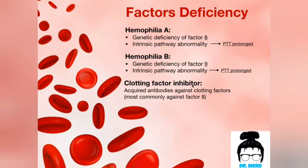Another disorder is a clotting factor inhibitor, or acquired hemophilia A. In this disorder, the body is normally producing factor VIII, but the issue is that the body is also producing antibodies against factor VIII. How to differentiate between hemophilia A and the clotting factor inhibitor? First, by age of presentation — in hemophilia A the patient would present very early because it's a genetic deficiency, while in a clotting factor inhibitor the patient would present later because it's an acquired disorder with acquired antibodies.